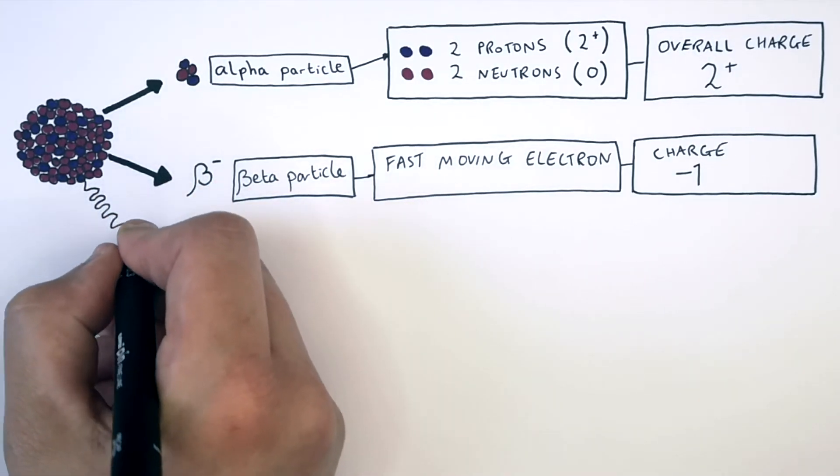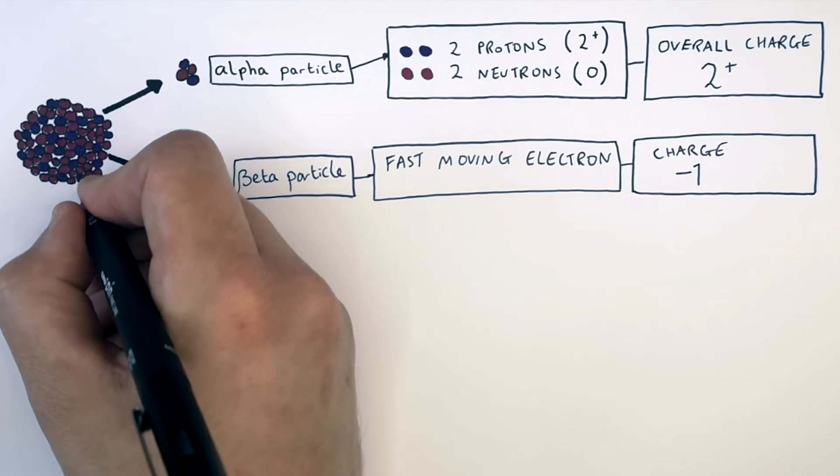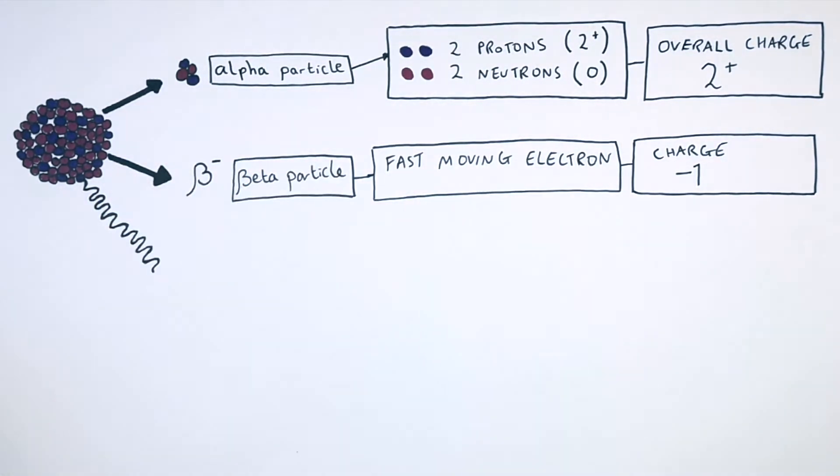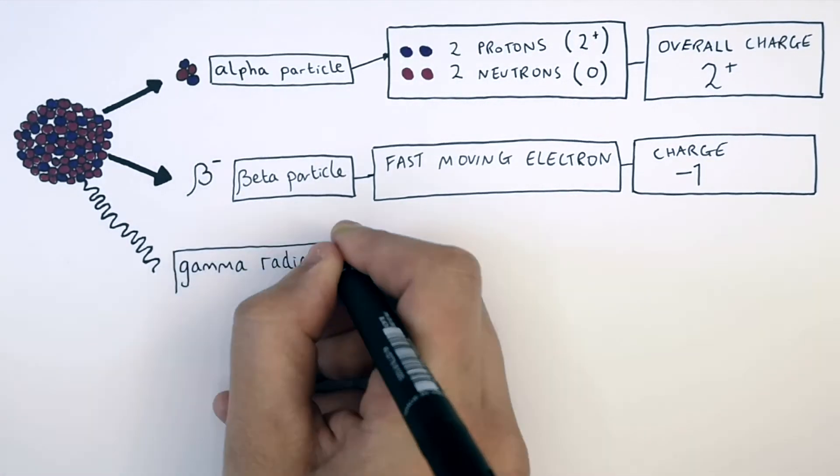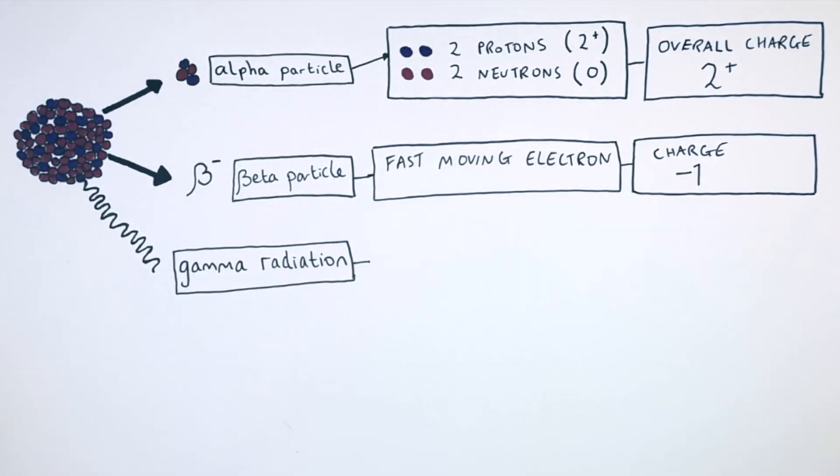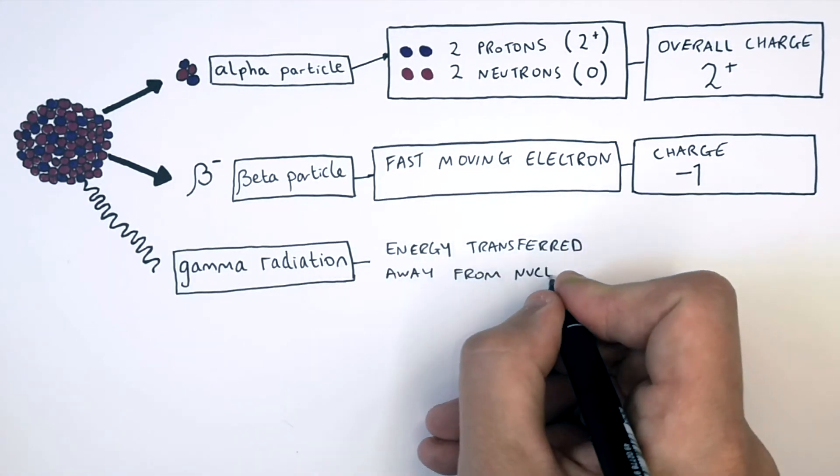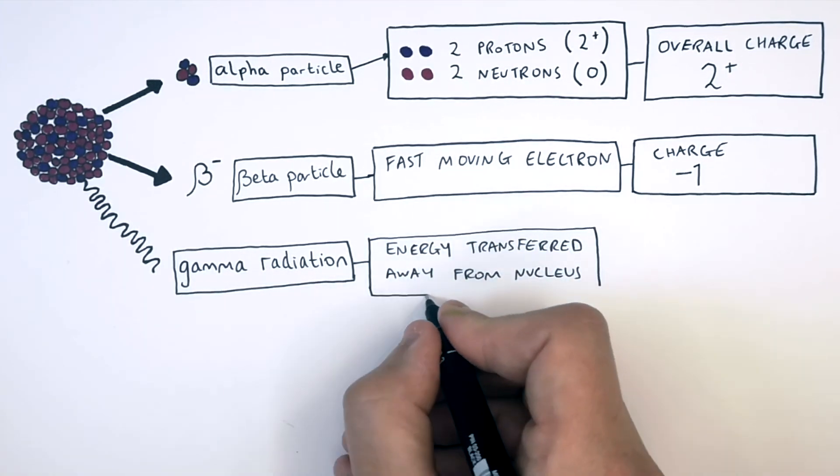So now the final type of radiation we're going to talk about after having looked at an alpha particle and a beta particle is gamma rays. A gamma ray is electromagnetic radiation from the nucleus of an atom. Because it is electromagnetic radiation, it has no charge and no mass. So gamma rays is energy transferred away from the nucleus of the radioactive isotope.